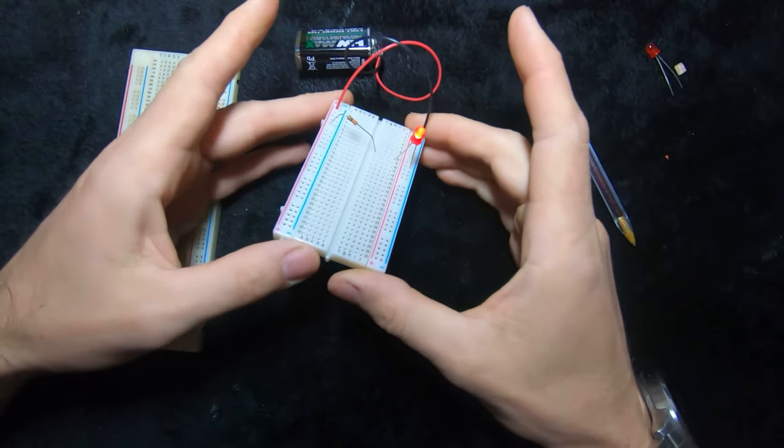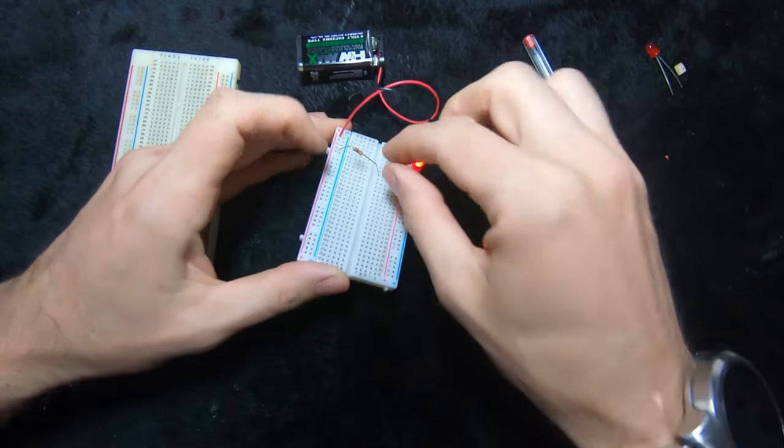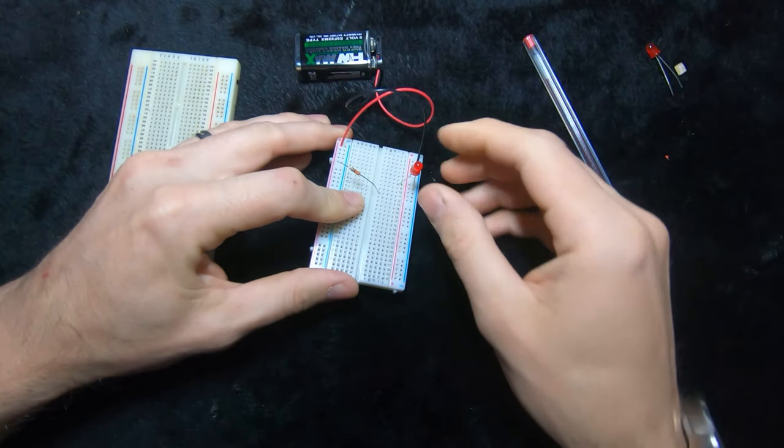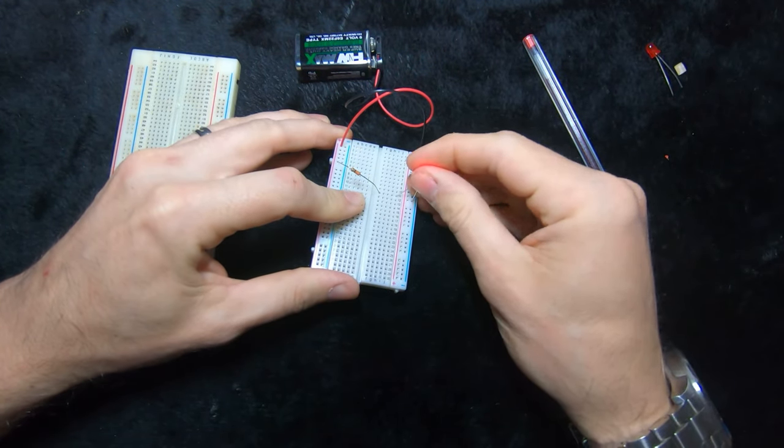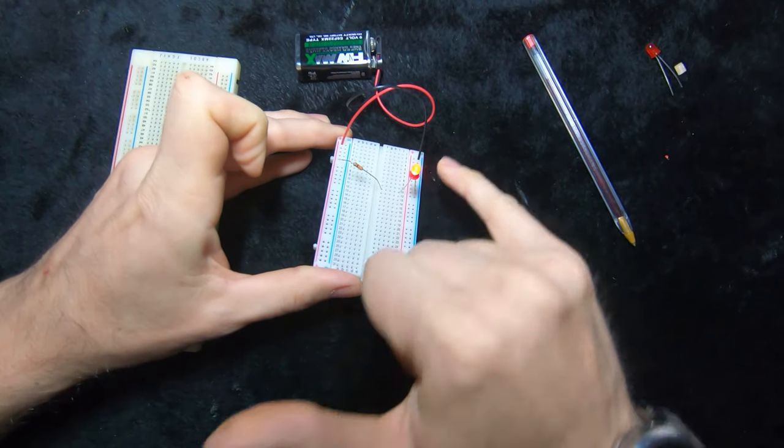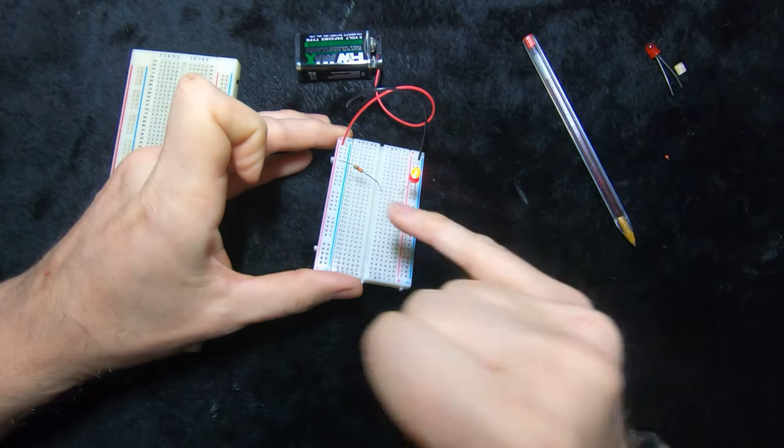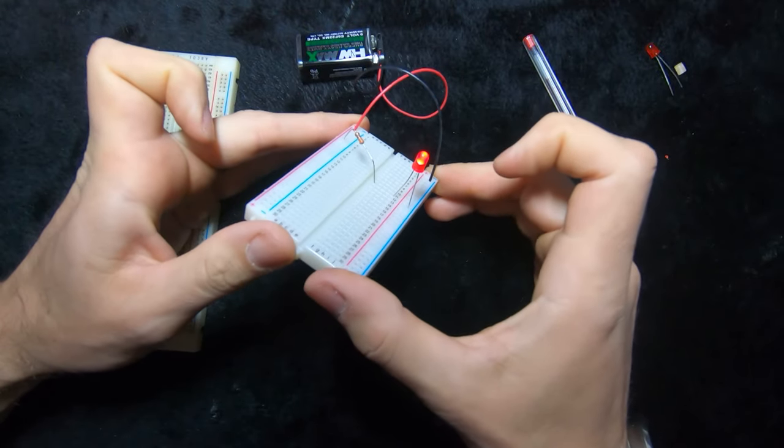Now I can do that anywhere on the breadboard. I can pull that resistor out there and I could put it into that hole there. I could move my LED and as long as I've got all the holes lined up with the wires and things that I want, it will work.